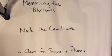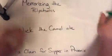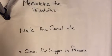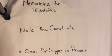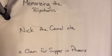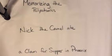Here's the first set that you need to know and love. This is a mnemonic. A mnemonic should make it easier for you to remember all of these random polyatomics. If you remember the mnemonic, you will be able to do nine different polyatomics just from this little phrase: Nick the camel ate a clam for supper in Phoenix.